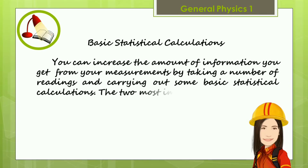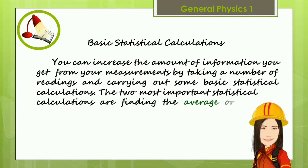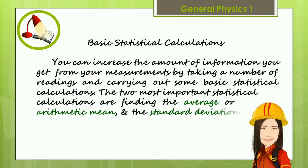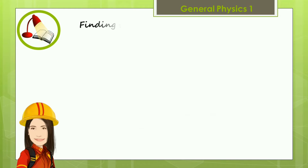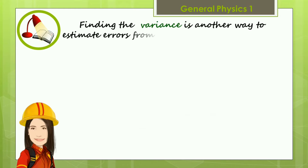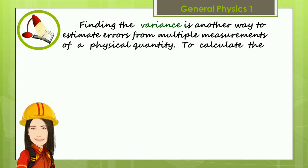The two most important statistical calculations are finding the average and the standard deviation. Finding the variance is another way to estimate errors from the multiple measurements of a physical quantity.